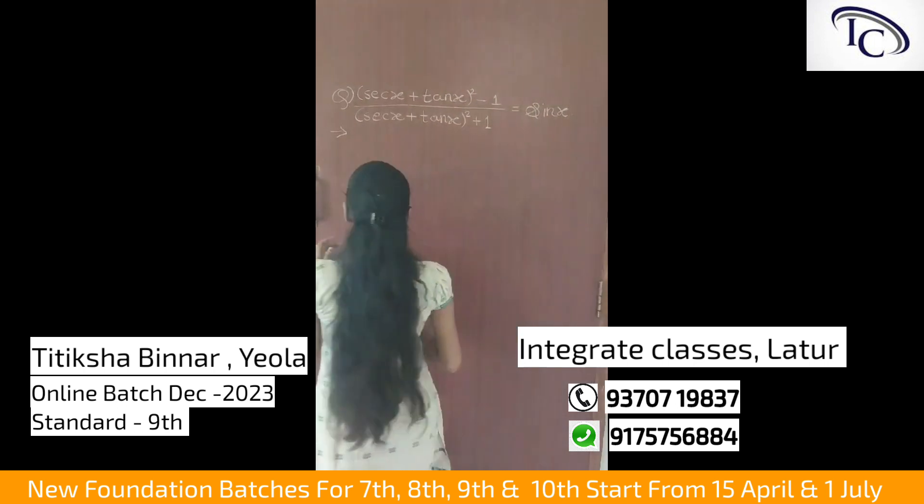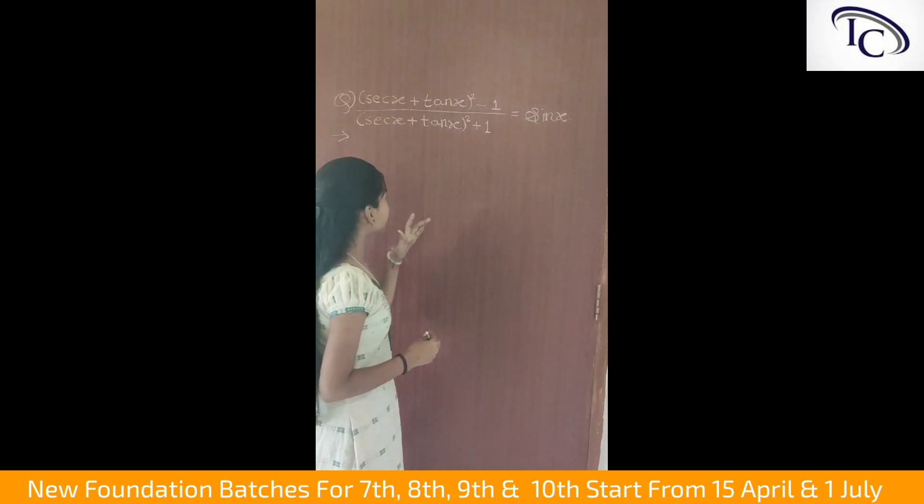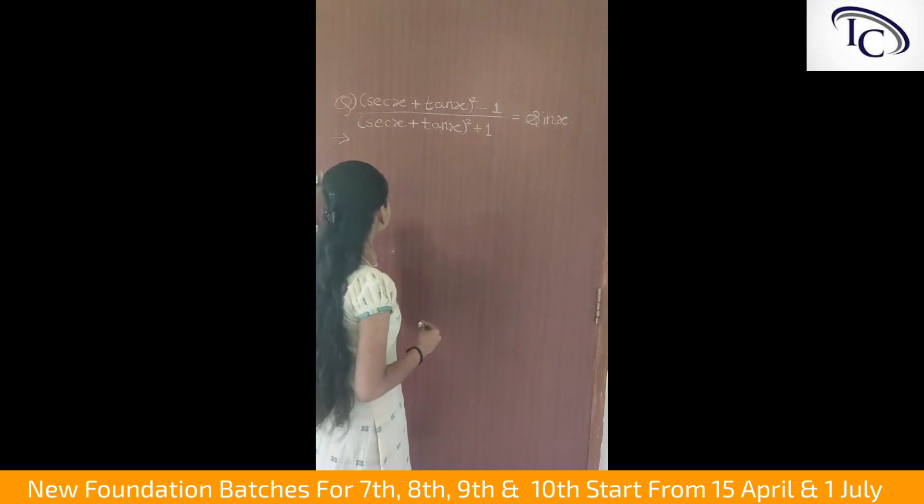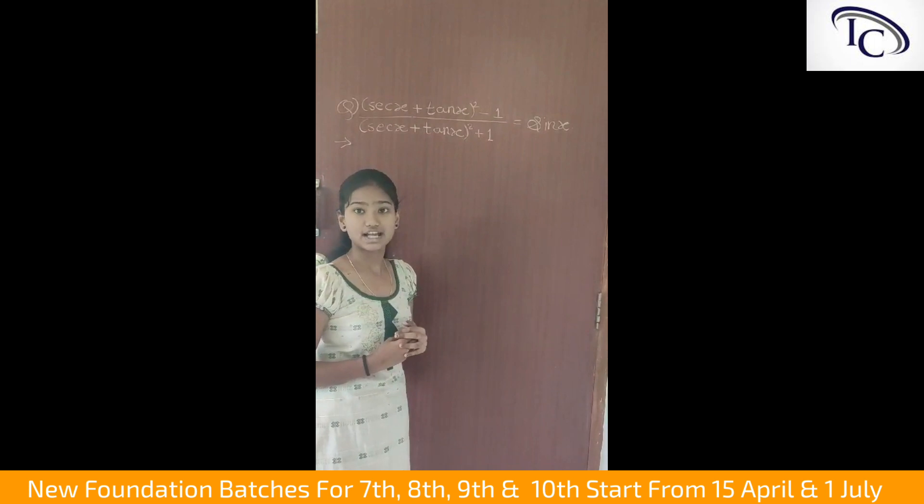So let's solve the problem. Problem is sec x plus tan x bracket square minus 1 upon sec x plus tan x bracket square plus 1 is equal to sin x.